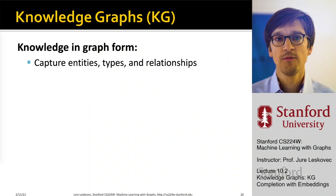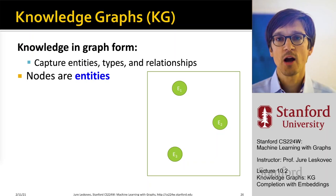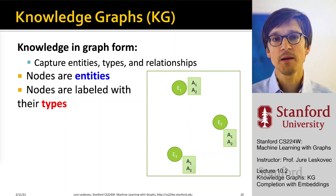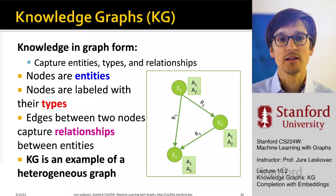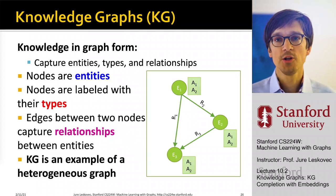A knowledge graph stores knowledge about a given domain in graph form. The idea is to capture entities, types, and relationships between different entities. Nodes are called entities, labeled with different types, and connected by different types of relationships. In this sense, a knowledge graph is an example of a heterogeneous graph, but we think of it as capturing factual knowledge about a given domain.